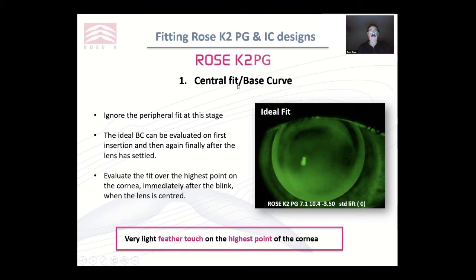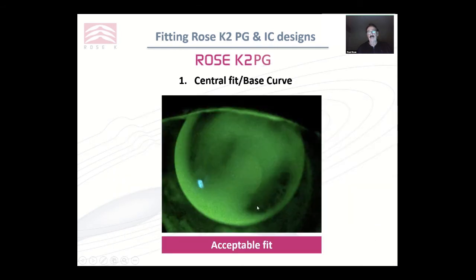Looking at fluorescent patterns for the central fit: we ignore the peripheral fit at this stage, just looking at what's happening over that central area. You can evaluate it as soon as you put the lens on and change lenses immediately if it's too flat or too steep. Always evaluate the fit over the highest point — which may not necessarily be central. With grafts, it's often along the edge of the graft. You're trying to achieve a very light feather touch as seen in this pattern here.